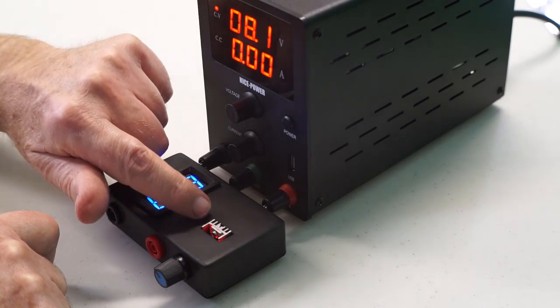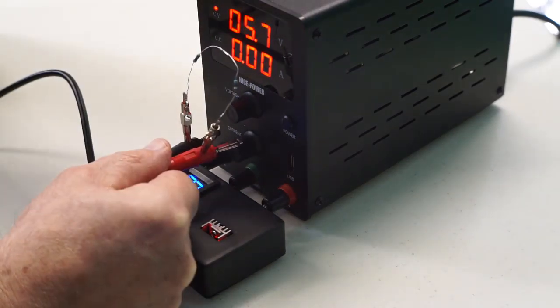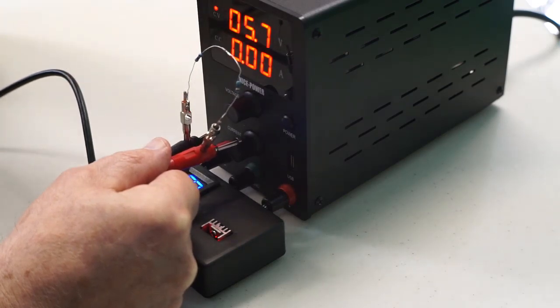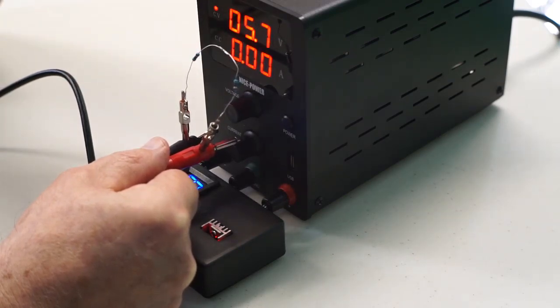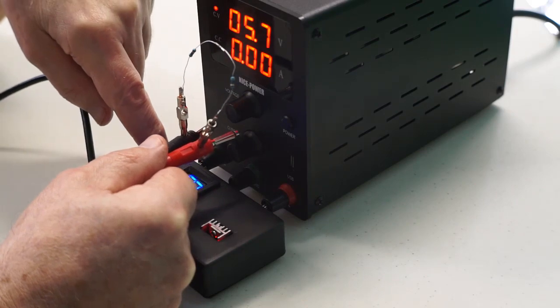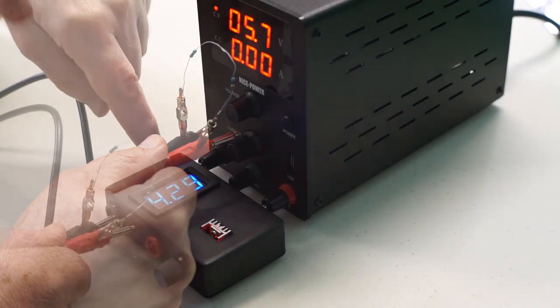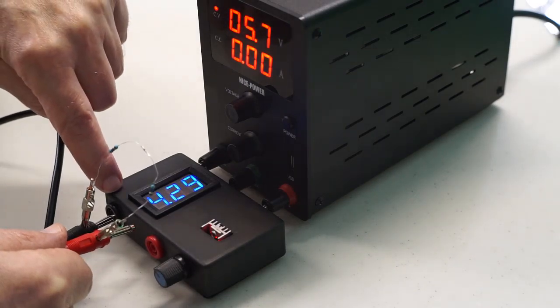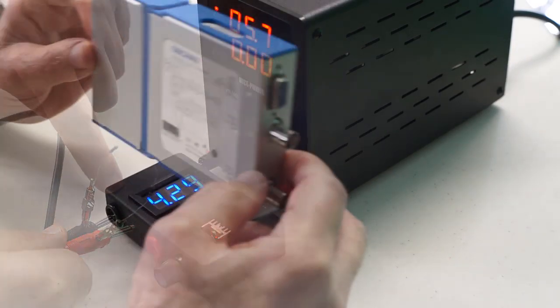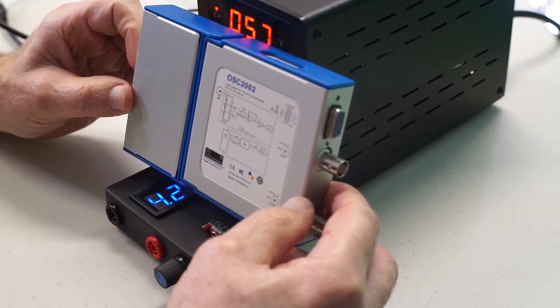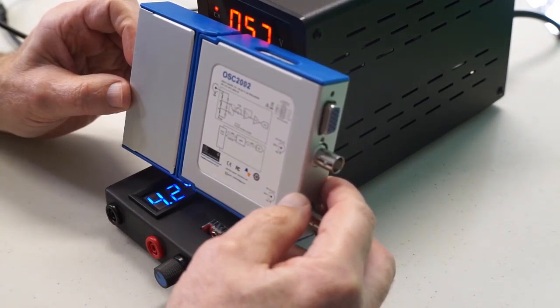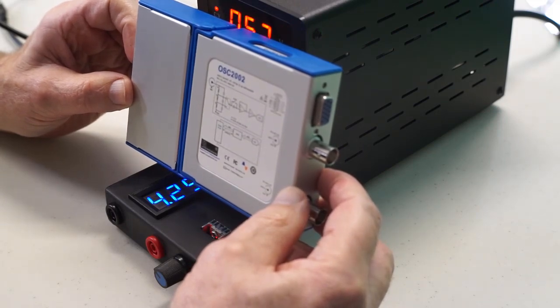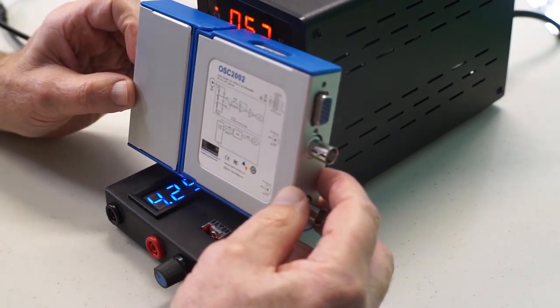We're going to first establish a benchmark by putting 100 ohms across the output of the switching power supply without the linear module attached, and then we're going to place the same 100 ohm resistance across the output of the linear module. We're going to be using the Loto OSC2002 for these tests and the very same settings for the linear power supply and for the switching power supply will be used.